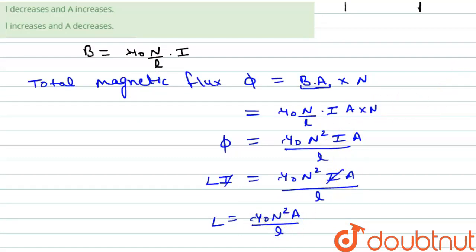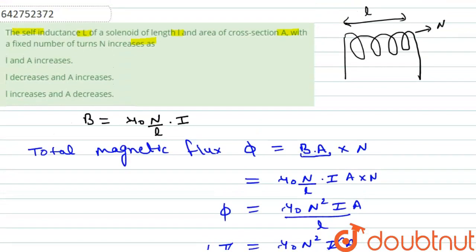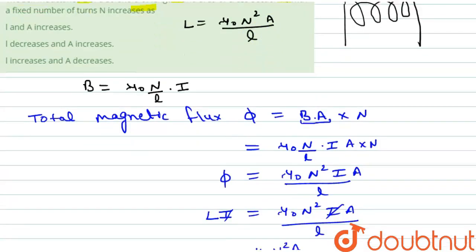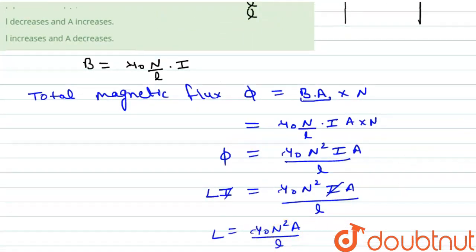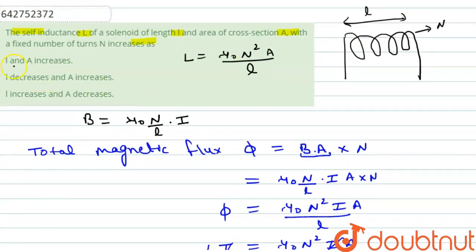Now, discuss all the options. As we have calculated that L is equal to μ₀N²A/L. We have calculated L is equal to μ₀N²A/L. So if L and A increases, as it is clear that L is directly proportional to A and inversely proportional to L.